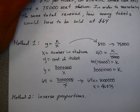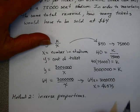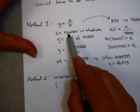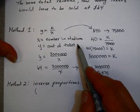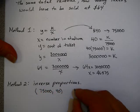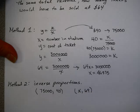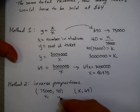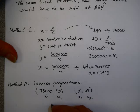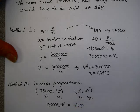So 46,875 tickets would need to be sold to maintain the same revenue. Using the inverse proportion method: x1 times y1 equals x2 times y2, so 75,000 times 40 equals 64 times x. Solving gives the same answer: 46,875.